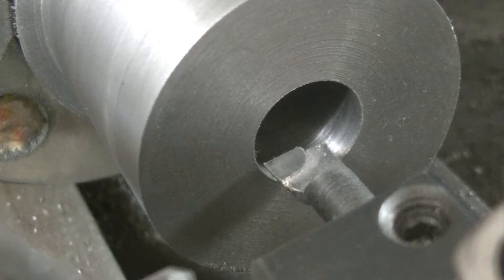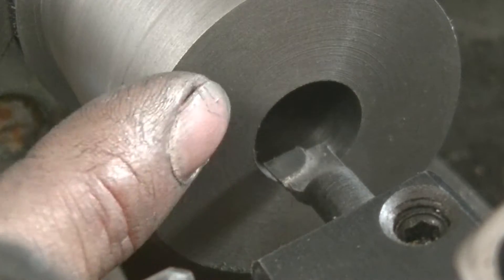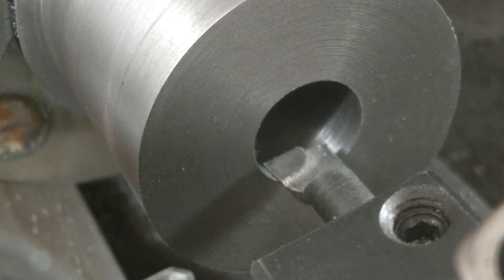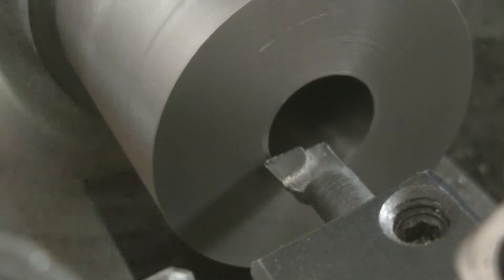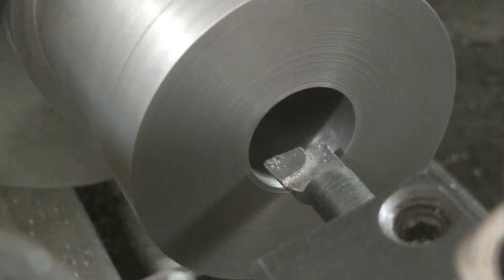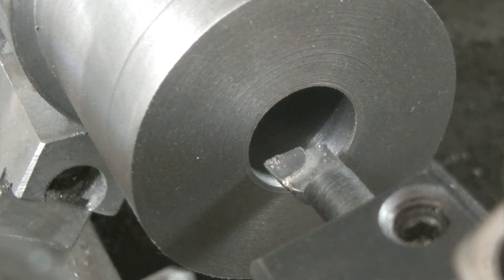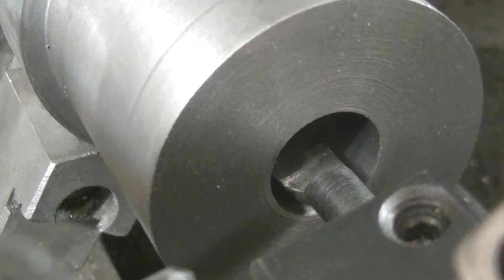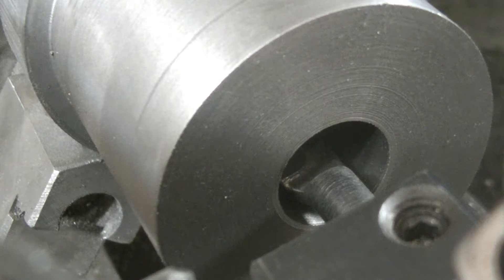We need to bore out this bigger bore right here, this recess. It's going to go in 400 thousandths, so we're going to touch off. Okay, so we've got the dial indicator set up. We're going to go in—one, two, three, four—set my zero.